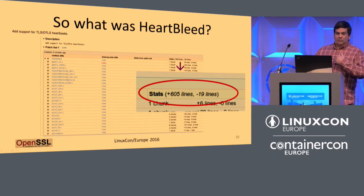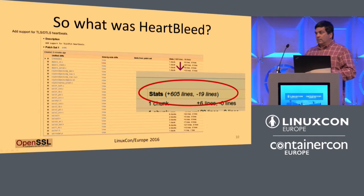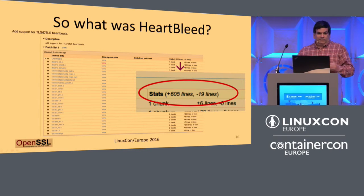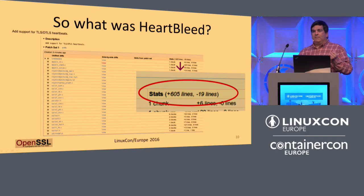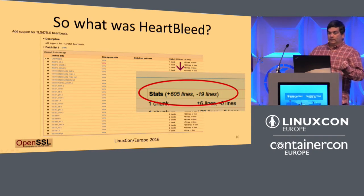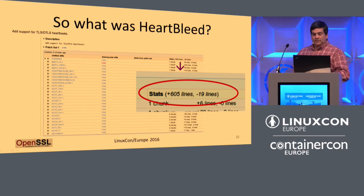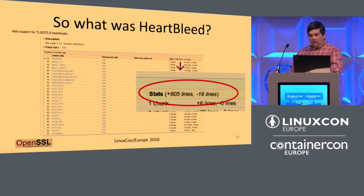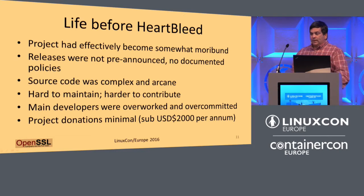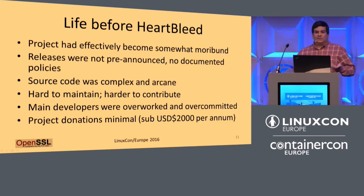The commits were always public. People were looking at things — 'many eyes make all bugs shallow, but only if they're open.' Heartbleed did have the advantage, at least for OpenSSL, of opening everybody's eyes. Why were they closed before? The project was snoozing, to put it politely. It had become more stagnant. Releases weren't announced.